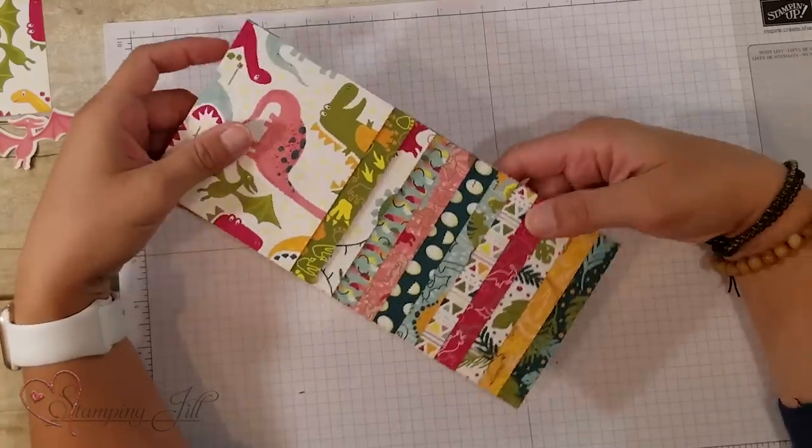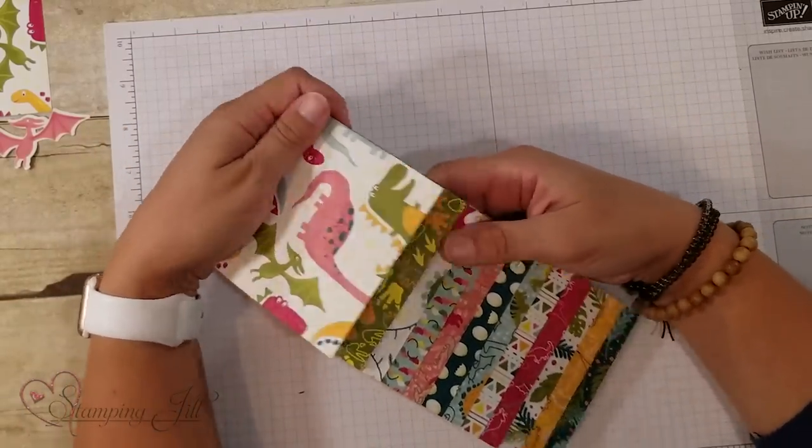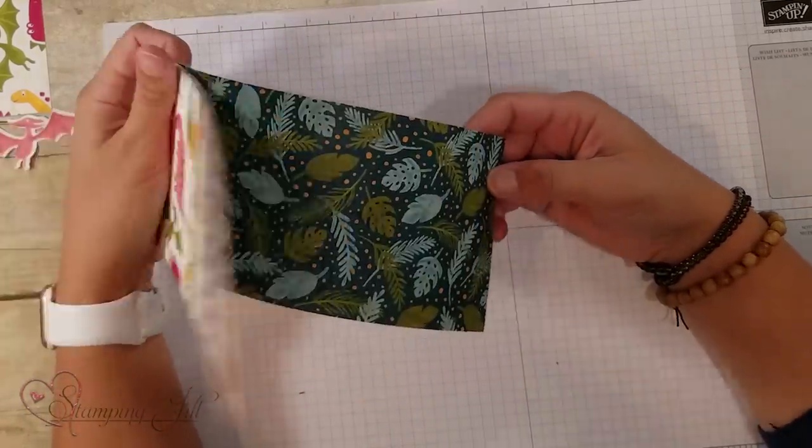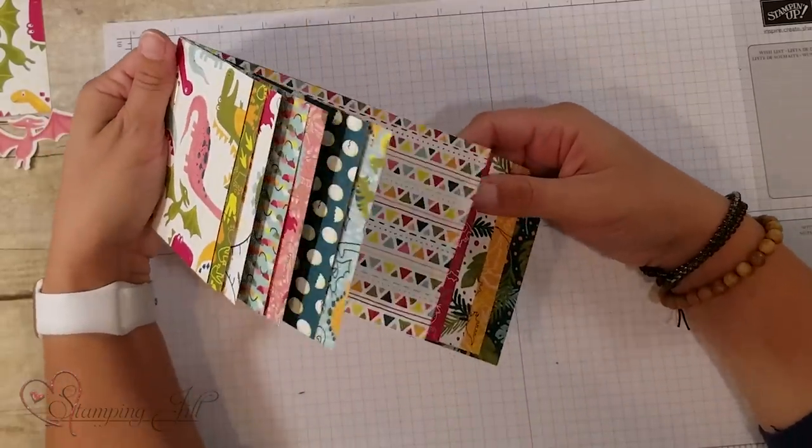And then the best part, I think, of this whole suite is the Designer Series Paper. It comes in size 12 by 12, and it's double-sided. And it's got all these great colors and patterns. It's been so much fun to play with and work with while I've been making these projects.